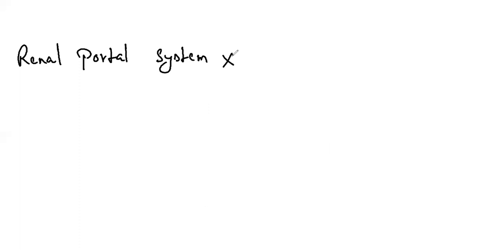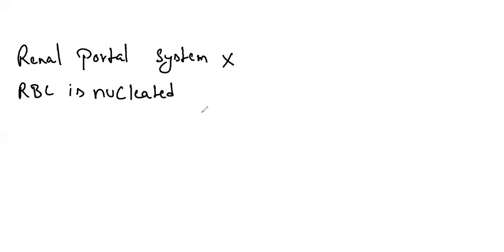The sinus venosus is absent. Only the right aorta is present. RBC is nucleated — in mammals it is enucleated, meaning absence of nucleus. The number of RBC per cubic millimeter is maximum in birds among animals, even more than mammals. Endoskeleton is bony; the bones are light and air-filled, called pneumatic bones, which make the body light and help for flying.